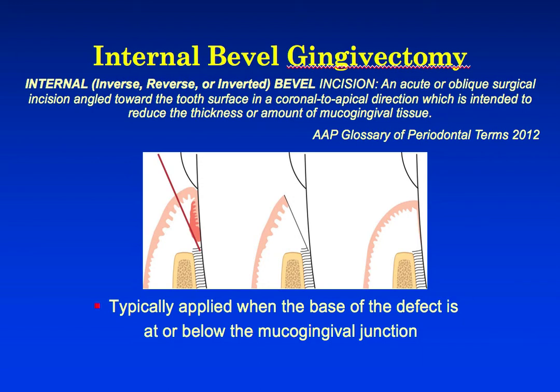Next, let's review the term internal bevel gingivectomy. An internal bevel gingivectomy refers to the initial incision — this is an acute or oblique surgical incision angled from a coronal to an apical direction. Internal bevel gingivectomies are done typically if you have an abundance of keratinized tissue and you're doing a procedure such as crown lengthening or an osseous resective procedure to treat disease.